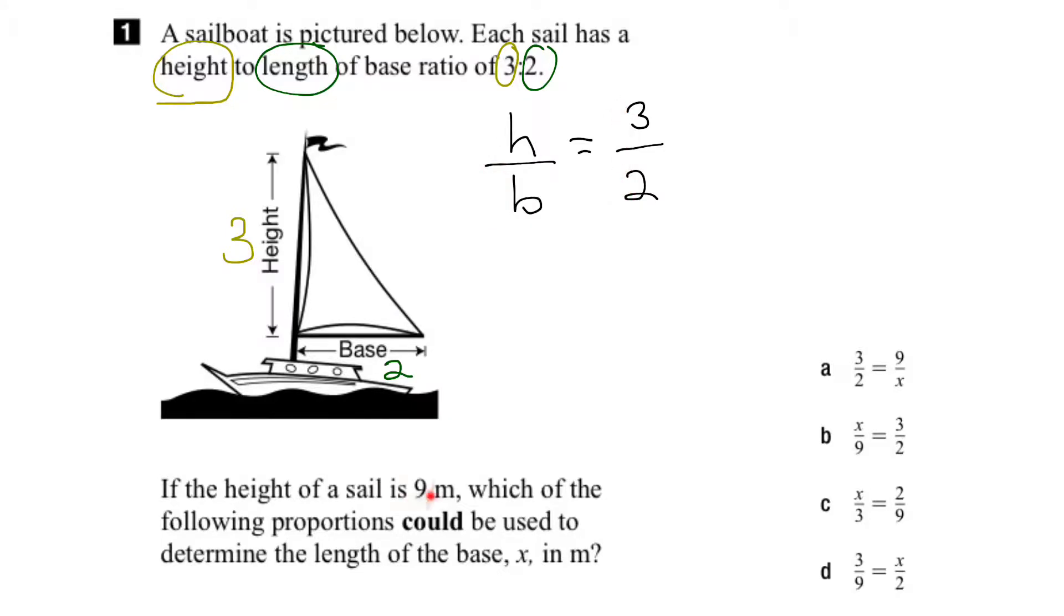Now, they also tell us that the height of the sail is 9 meters. And then what they want us to determine is which of these could represent the base.